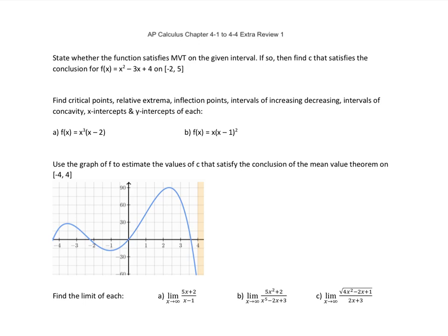For this first problem, it says state whether the function satisfies MVT, which is the Mean Value Theorem, on the given interval. If so, then find C that satisfies the conclusion. With the Mean Value Theorem, we've got two parts, and then a third that's satisfied if parts 1 and 2 are true.